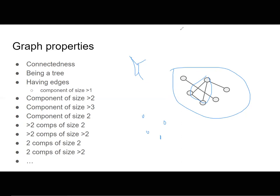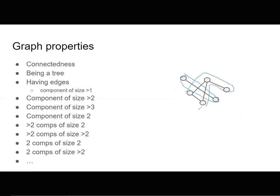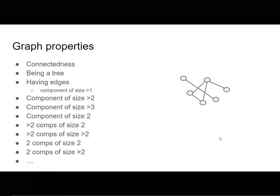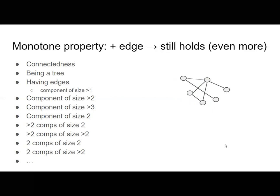Having components of size one, two, or three is also a property. In this graph, there is one connected component of size two and the other four vertices are in a connected component of size four. There are lots and lots of graph properties you can define, saying for every graph whether it has the property or not.